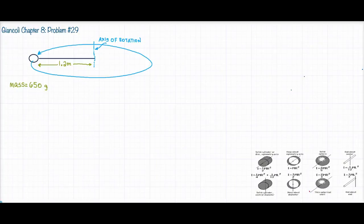This is problem number 29 out of chapter 8. It says a small 650 gram ball on the end of a thin light rod is rotated in a horizontal circle of radius 1.2 meters.